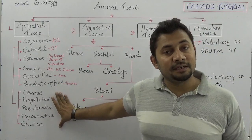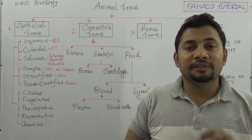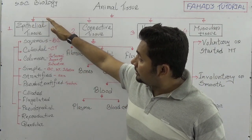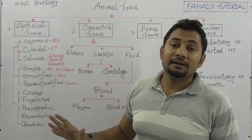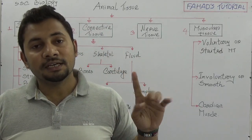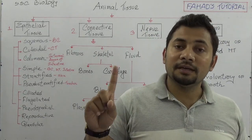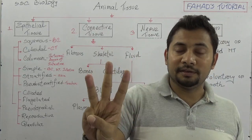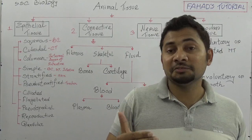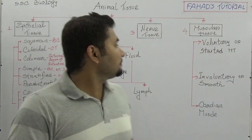Based on transformation, there are five more types of epithelial tissue: ciliated, flagellated, pseudopodial, reproductive, and glandular. Your book describes their functions and where each is found. So in total, epithelial tissue has 11 types based on three categories: squamous, cuboidal, columnar; simple, stratified, pseudostratified; and ciliated, flagellated, pseudopodial, reproductive, and glandular.